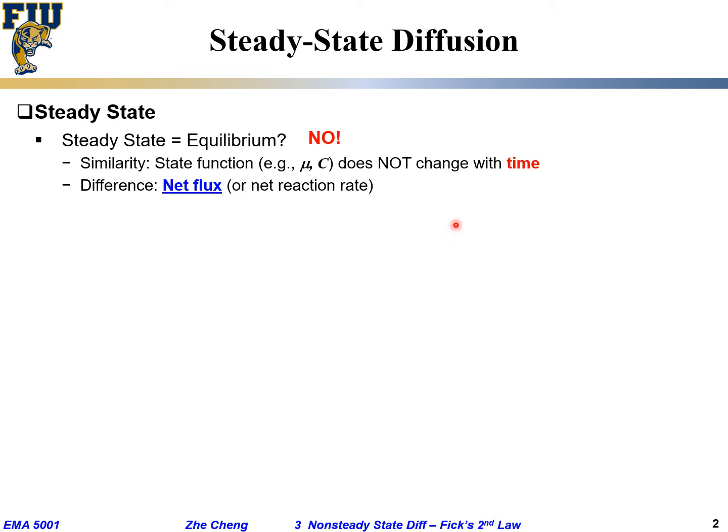But there is one major difference, which is about the net flux, or the net flow of things, or the net reaction rate. When we say under equilibrium condition, the net flux, or the so-called net reaction rate, is zero. Equilibrium means whatever goes to the right equals whatever goes towards the left. Whatever goes from ice to liquid water equals whatever goes from liquid water to ice. That's equilibrium.